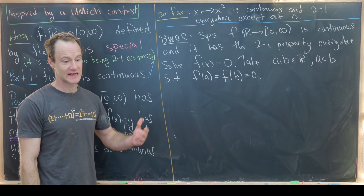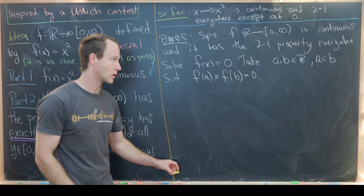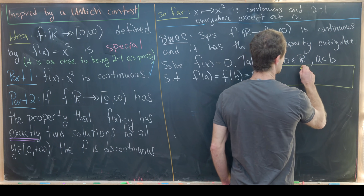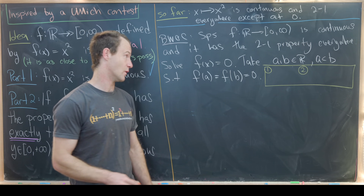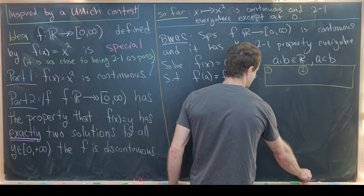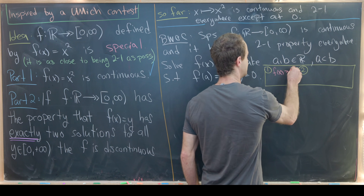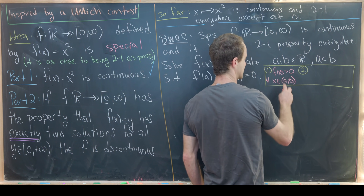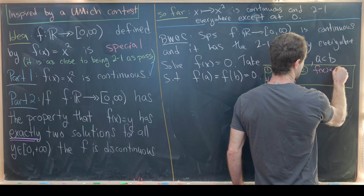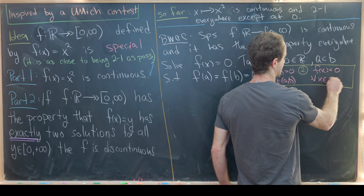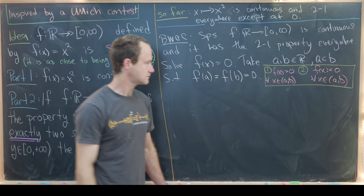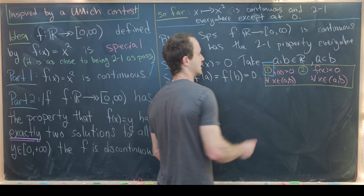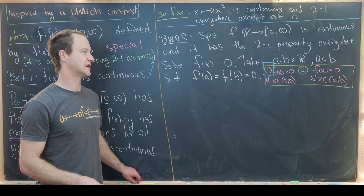Between a and b, the function can never equal zero since we've already used both solutions. So f must be either always positive or always negative on (a, b). This gives two cases that are solved essentially the same way — we'll focus on the case where f(x) > 0 for all x in (a, b).